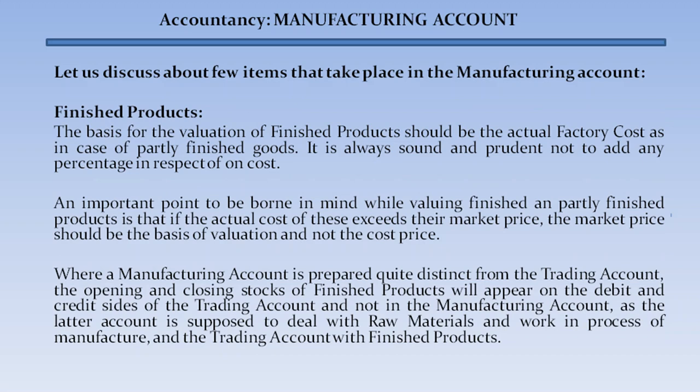Finished products: the basis for the valuation of finished products should be the actual factory cost. As with partly finished goods, it is always prudent not to add any percentage in respect of overhead. An important point to bear in mind while valuing finished and partly finished products is that if the actual cost exceeds market price, market price should be the basis of valuation and not cost price. Where a manufacturing account is prepared quite distinct from the trading account, the opening and closing stocks of finished products appear on the debit and credit sides of the trading account, not in the manufacturing account, as the latter deals with raw materials and work in process of manufacture.